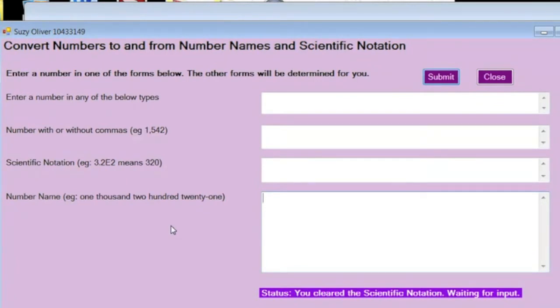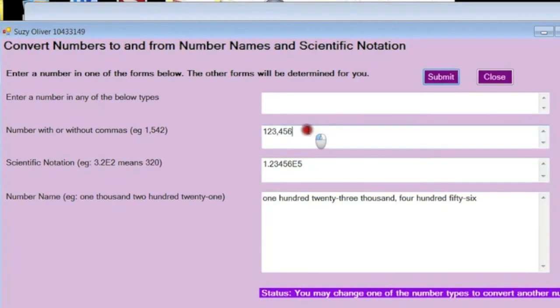So instead of using an integer, I've got a string of digits that I deal with. So I can enter the number, it can have commas or not, like that. Or I can put it in without commas.